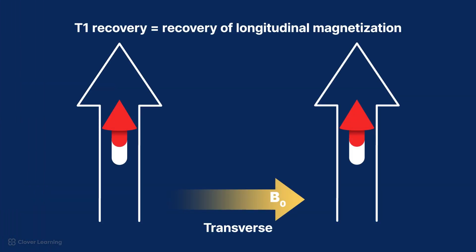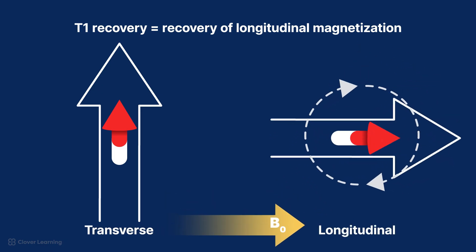Spin-lattice relaxation, also known as T1 recovery or T1 relaxation, is the recovery of longitudinal magnetization, or the process by which the nuclei give up their energy to their surrounding environment or lattice.